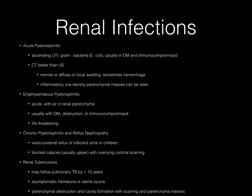Chronic pyelonephritis and reflux nephropathy: VU reflux of infected urine is the cause in children, and typically presents with blunted calyces — usually the upper calyces — with overlying cortical scarring. Renal tuberculosis may follow pulmonary tuberculosis by greater than 10 years, usually with asymptomatic hematuria or sterile pyuria. Imaging findings include parenchymal destruction and cavity formation with scarring and parenchymal masses.